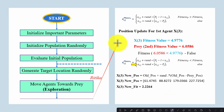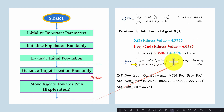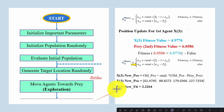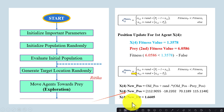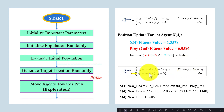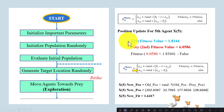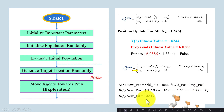Similarly, we compute the fitness value for the third, fourth, and fifth agents. For the third agent, the condition is false, so we update using the equation and obtain a new fitness value of 2.2264. For the fourth agent, the condition is false again, so we update and obtain the new position and fitness value. For the fifth agent, the condition is false, so we update the position and obtain a new fitness value of 1.6417.